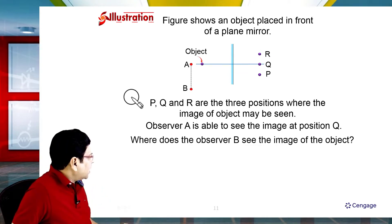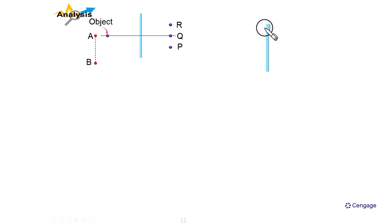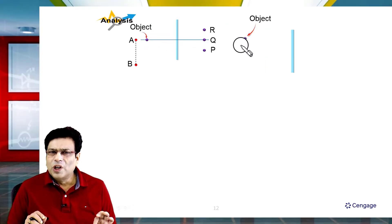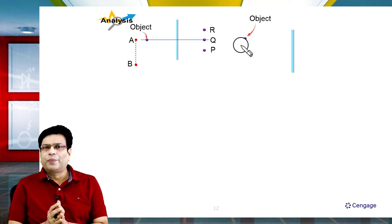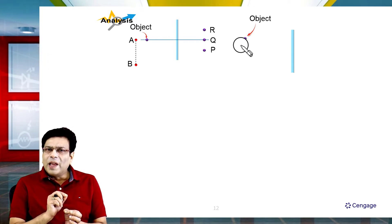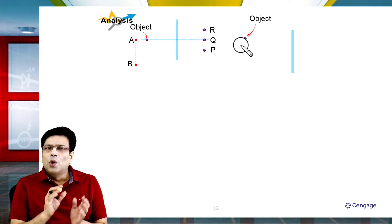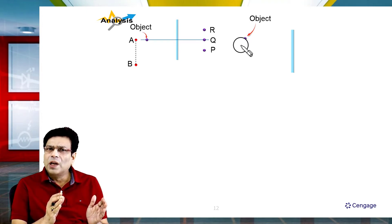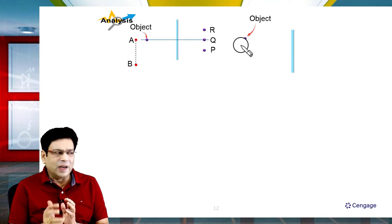I will place the diagram on the next page and copy it here. Now we draw the image. If a light ray is incident normally on the plane mirror, it will retrace. The object distance in front of the plane mirror equals the image distance behind the plane mirror.